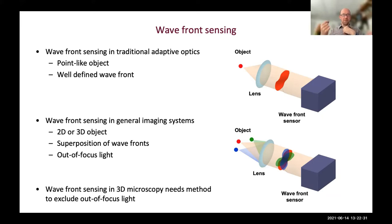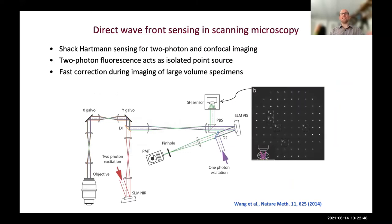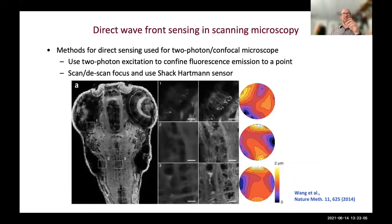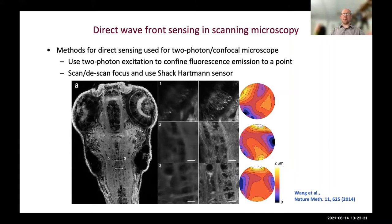One way to use wavefront sensors effectively in microscopes is with two-photon excitation, where you know fluorescence only comes from the focal spot - effectively giving you a point-like guide star, as in telescopes. The most effective implementation I know of is from Eric Betzig's group, where they use two-photon excitation to create a source for a Shack-Hartmann sensor, enabling on-the-fly correction of aberrations. Combined with deconvolution enabled by the adaptive optics, this made considerable difference in relatively thick but transparent zebrafish embryos. However, wavefront sensors are not a general solution for all types of microscopes.